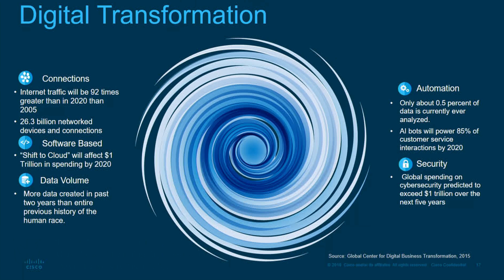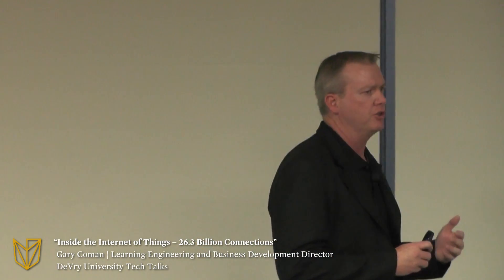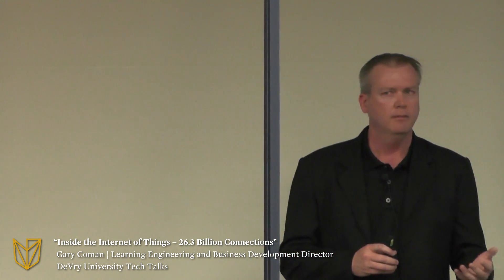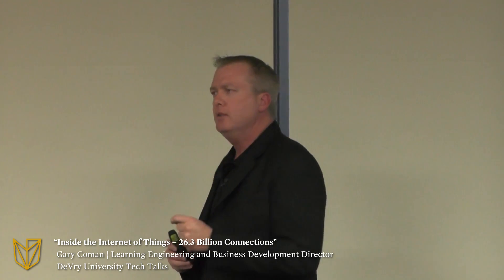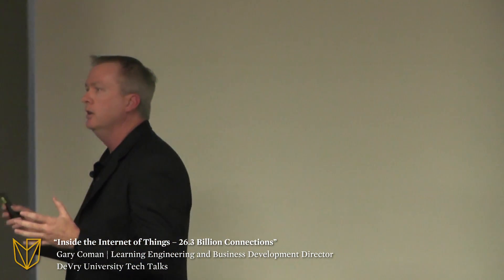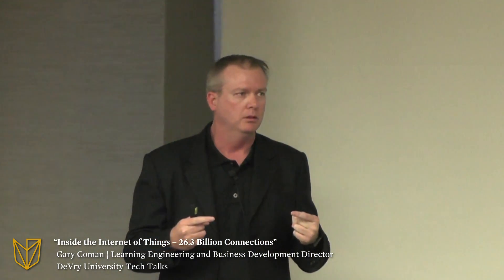Now if we're 7 billion people and 100 billion devices, does that mean that all of us are going to have 25 devices, 30 devices, 100 devices? No. What it means is that we'll talk about the internet of things in the context of how you as an individual connect and participate. But where this really blows up is when things start connecting to each other and they become autonomous in their behavior.